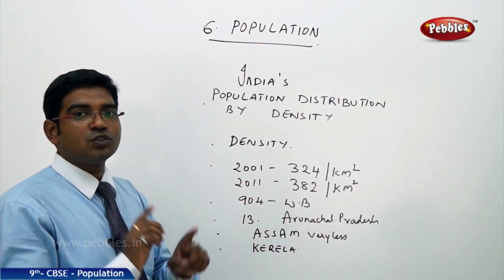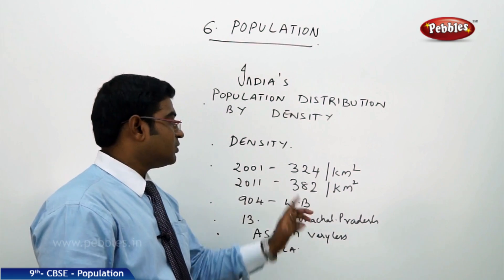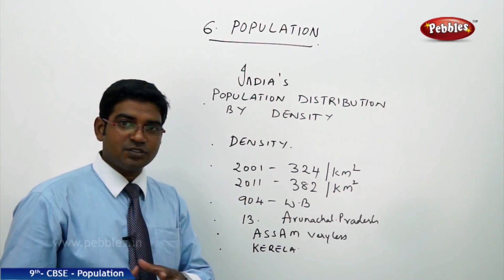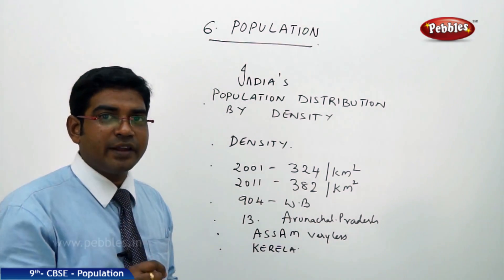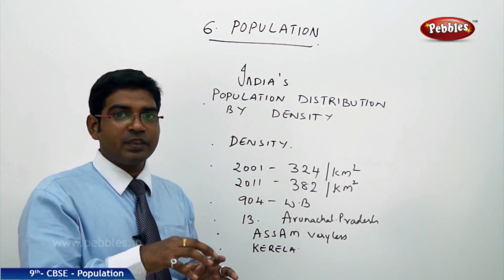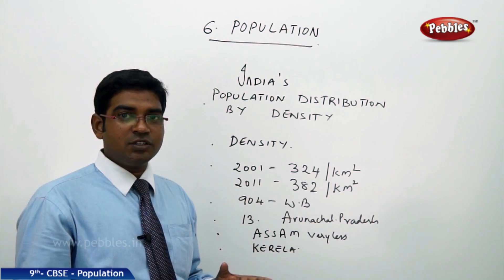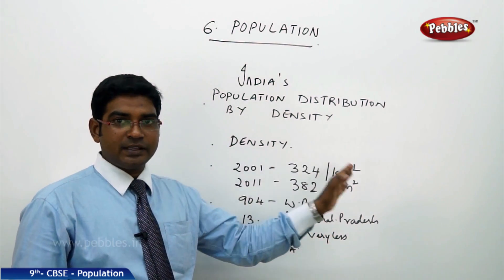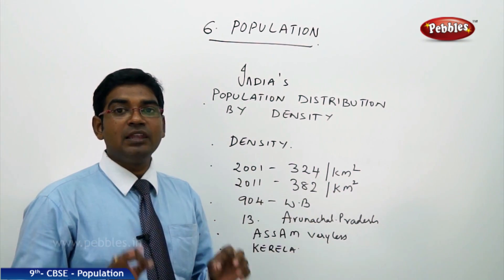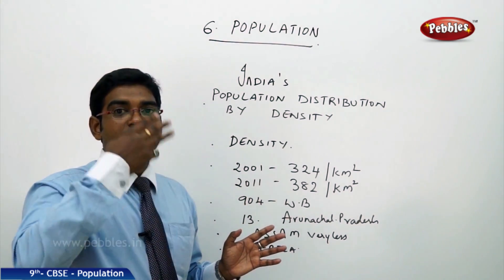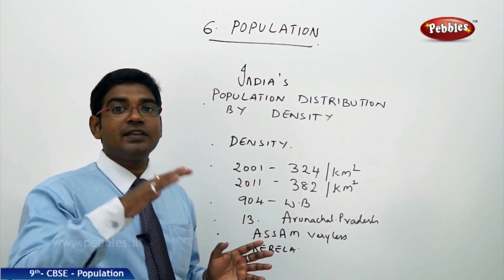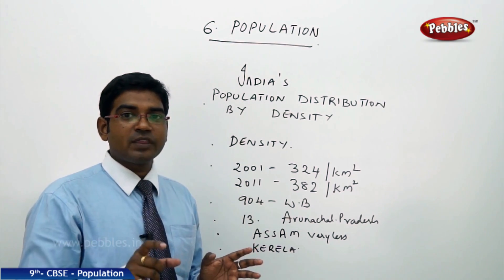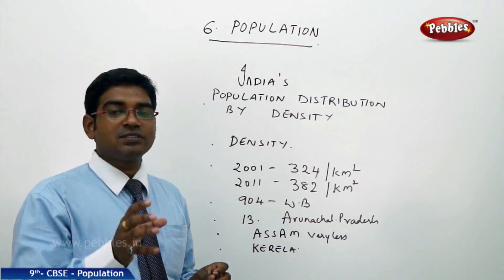According to the 2001 census, the density of India per square kilometer was 324, which rose to 382 as per the 2011 census. So in every square kilometer, you find 382 people on average. However, this is not uniform across the nation. In West Bengal, as per the 2001 census, there are 904 people per square kilometer — about three times the national average.